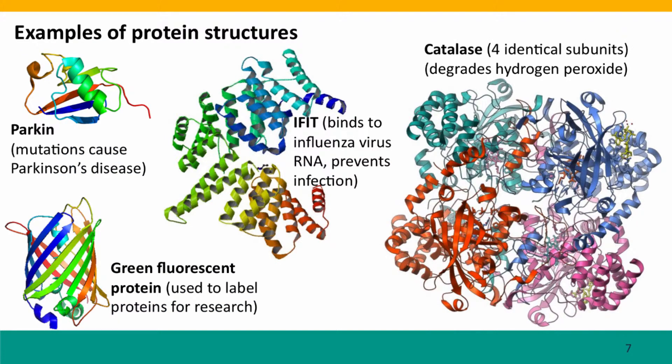Now here's some examples of protein structures. Starting with quite a simple little protein called Parkin. Even this is probably 10 times more complicated than the protein in the animation. Mutations in Parkin cause Parkinson's disease. That's how it's got its name.